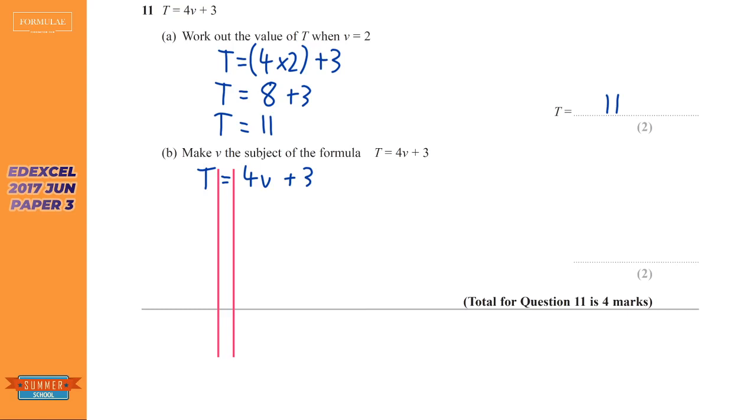So how are we going to get rid of that plus 3? We'll do the inverse which is take away 3. And so we've got T minus 3 equals 4v.